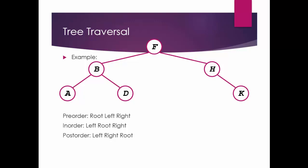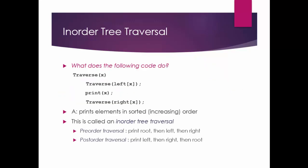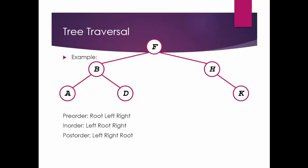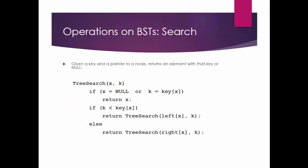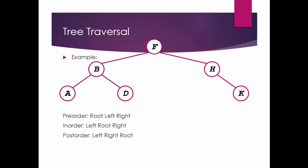In in-order: traverse(x) — traverse left of x, then print x, then traverse right of x. For post-order: left, right, then root. That means first we traverse left of x, then traverse right of x, and after that we print x. The root comes last. So this is the basic structure of tree traversal.